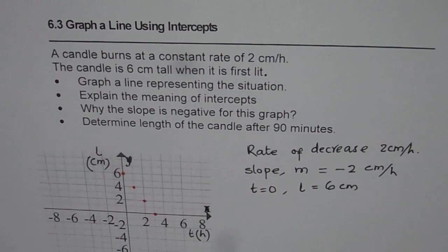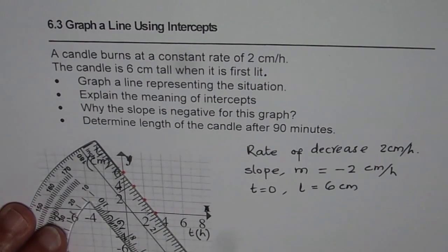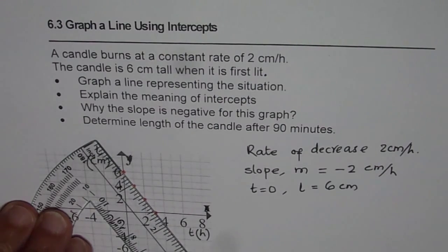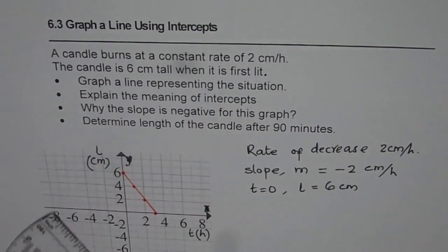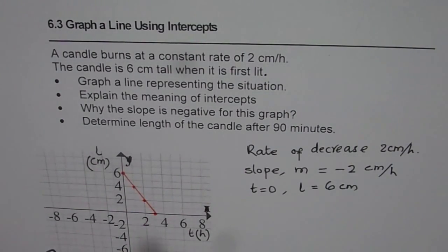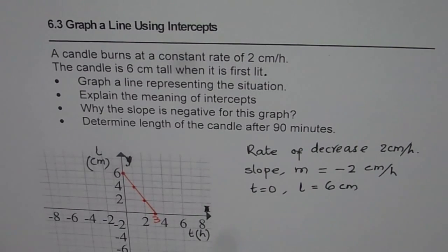So basically, what we see here is that these dots represent length of the candle with time. Let me join them first. Should I extend or not? That is the question for you. Now, what happens at this time? This time is 3 hours. And at 3 hours, what is the length? Length is 0. That means there is no more candle. So it cannot go negative.